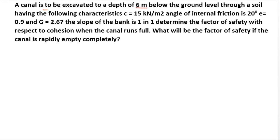The cohesion c equals 15 kilo Newton per meter square, angle of internal friction φ equals 20 degrees, void ratio e equals 0.9, and specific gravity G equals 2.67. The slope of the bank is 1 in 1, so the i value is 45 degrees. We need to determine: first, the factor of safety with respect to cohesion when the canal runs full; and second, the factor of safety if the canal is rapidly emptied completely.